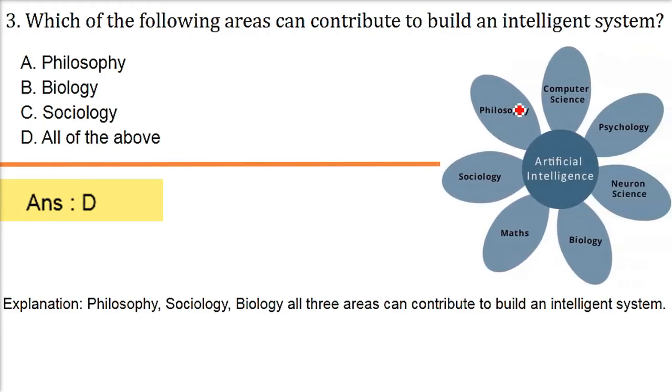It is philosophy, sociology, mathematics, biology, neuron science, psychology, computer science, all these. Because in computer science, you have a subject of AI. So all these combined together, they build an intelligent system.